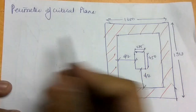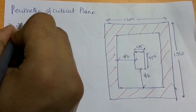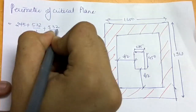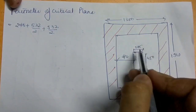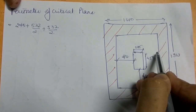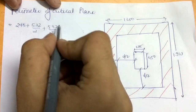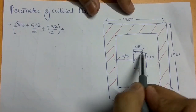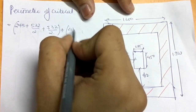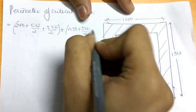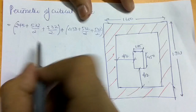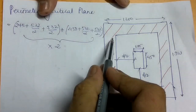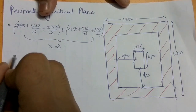The perimeter of the critical plane is: (275 + 532/2 + 532/2) for the width side, which equals 275 + 532. For the length side it is 450 + 532/2 + 532/2, which equals 450 + 532. Multiply by 2 to get the total perimeter.